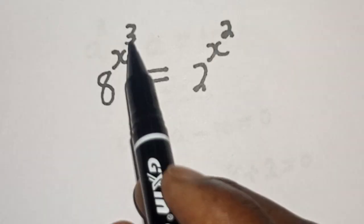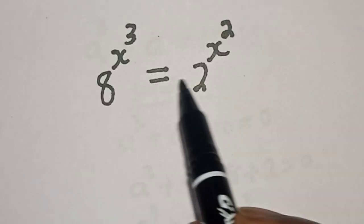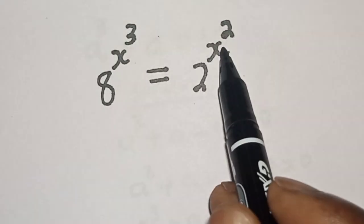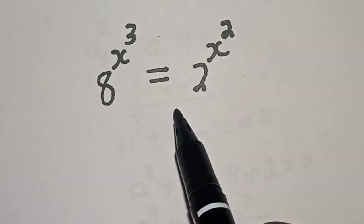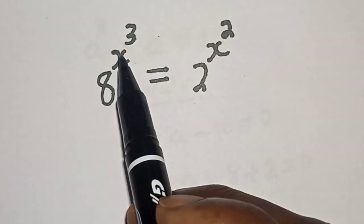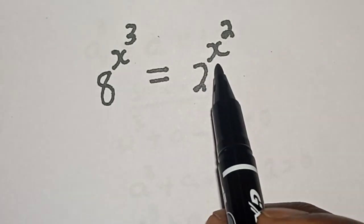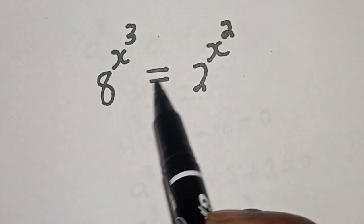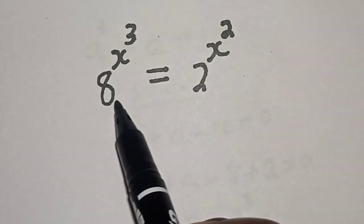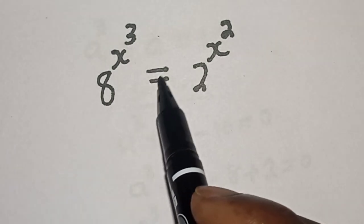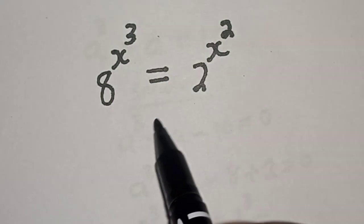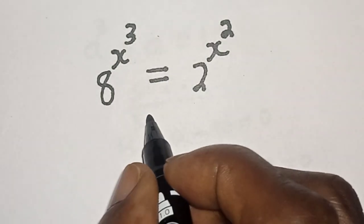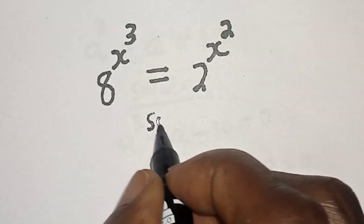8 raised to power s raised to power 3 is equal to 2 raised to power s squared. Hi everyone, welcome to my class. In this class I want to find the value of x from this equation. But before we proceed, please don't forget to like, share, comment and subscribe.